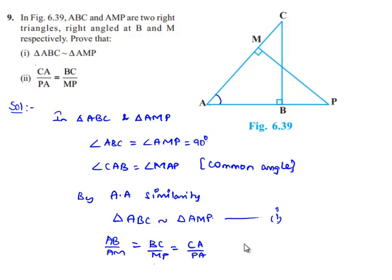If we consider the last two terms of proportion then we get CA by PA is equal to BC by MP. This is whatever second proof required.